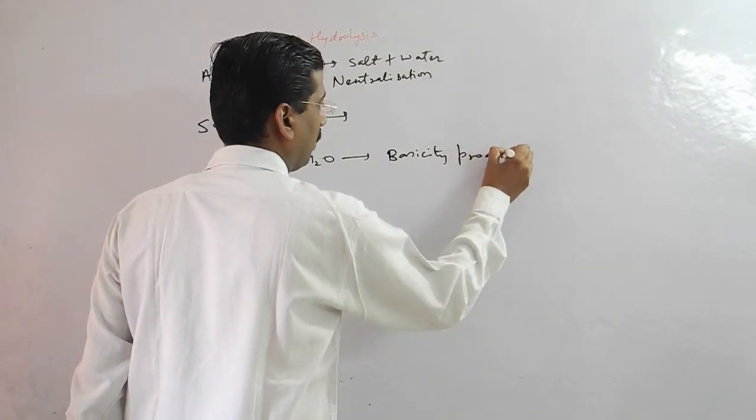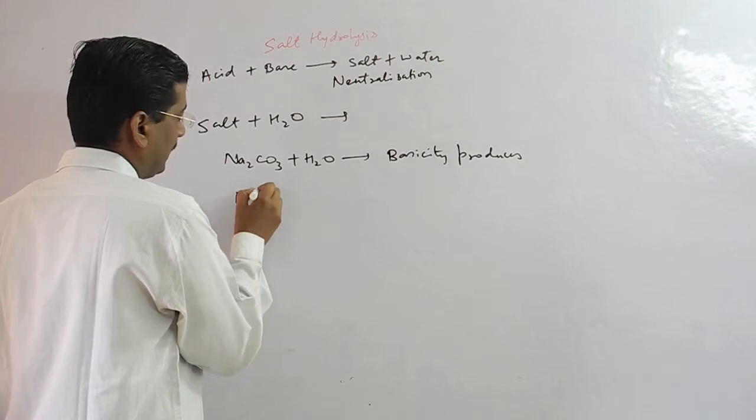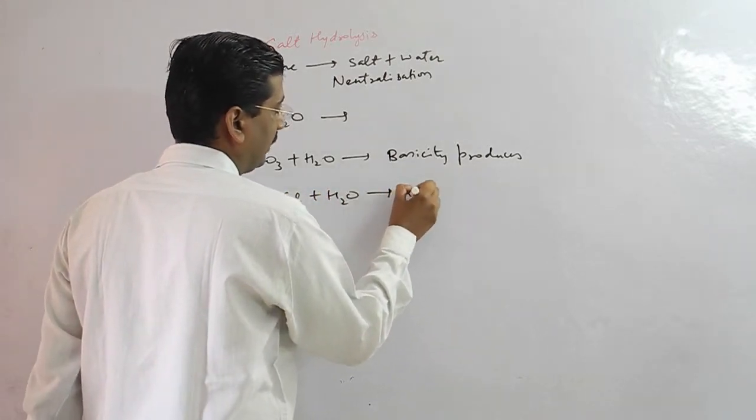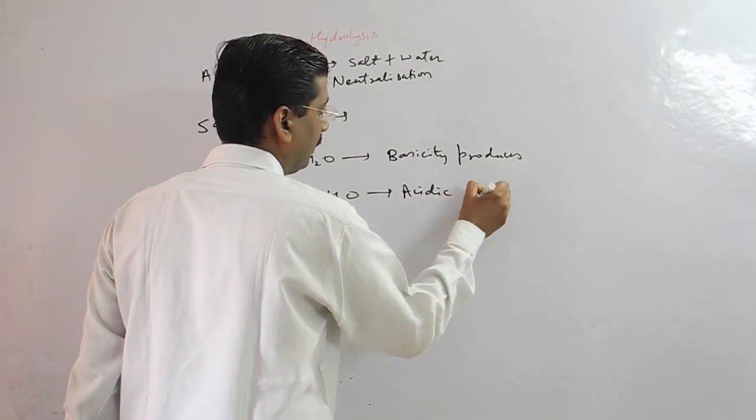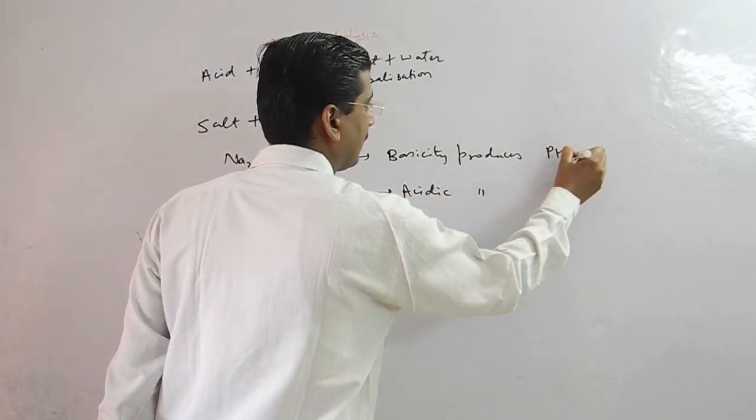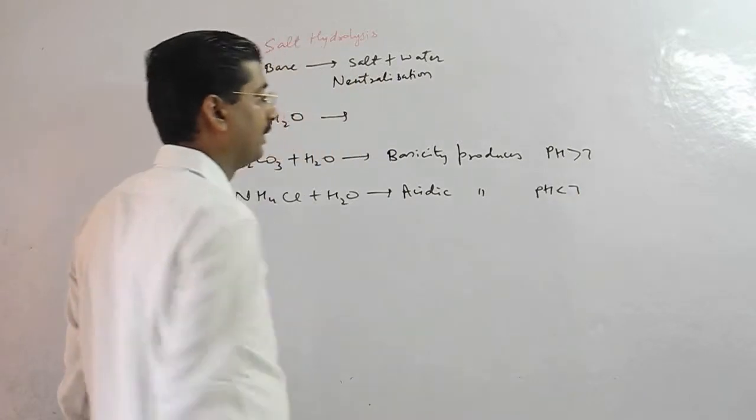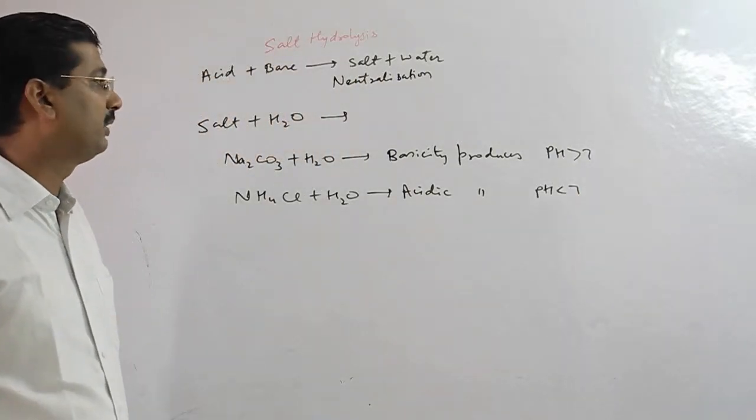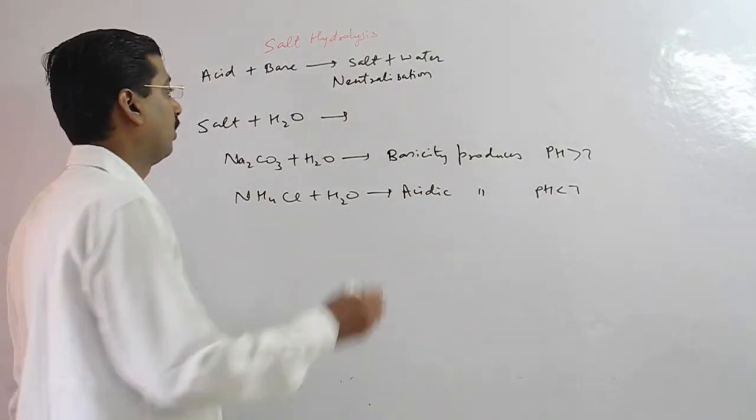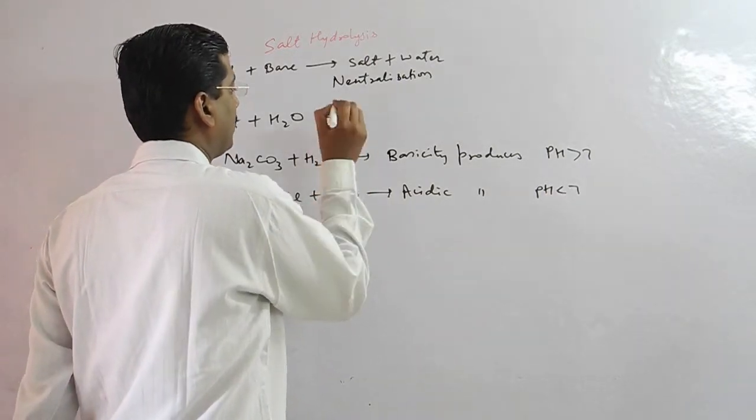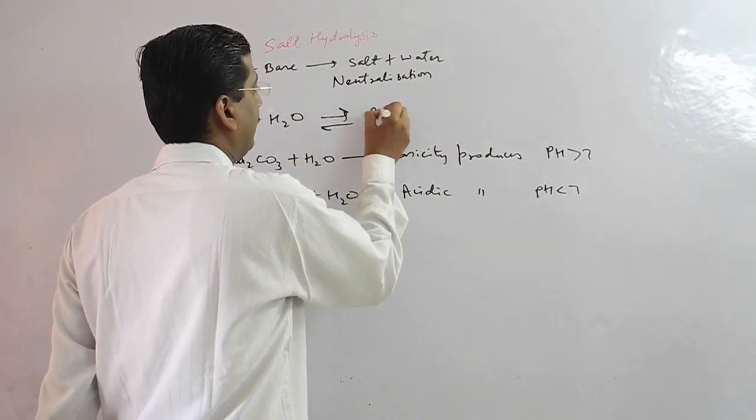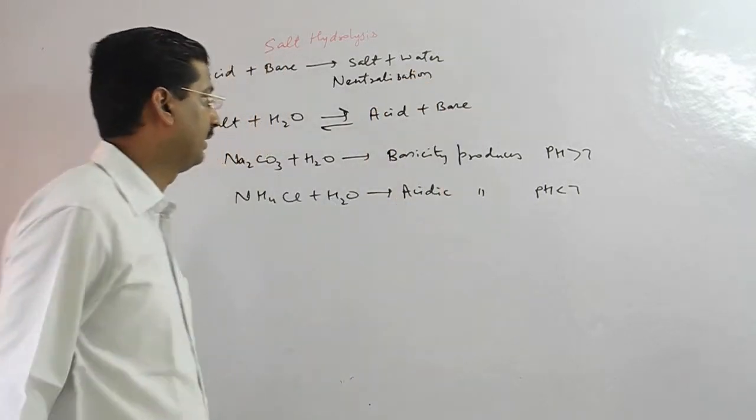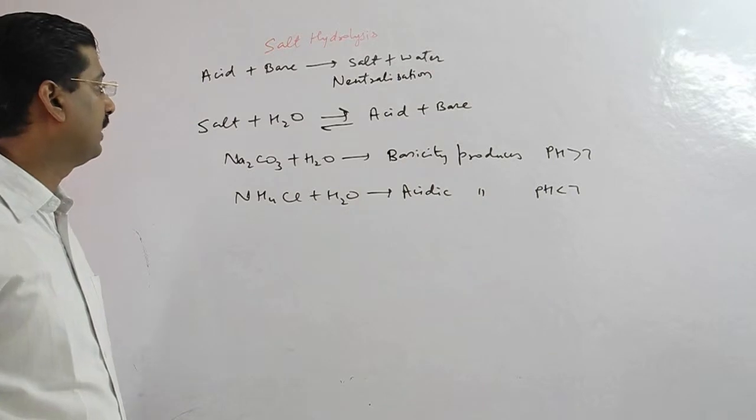If you take NH4Cl and put it in water, then the solution pH is less than 7. This condition is produced. So we call this salt hydrolysis. Salt hydrolysis is a reversible reaction which is acid plus base.